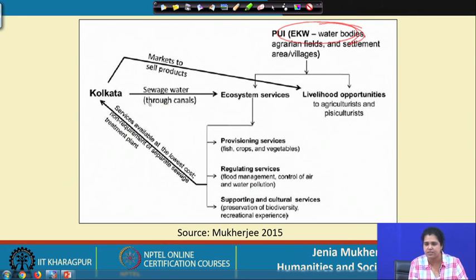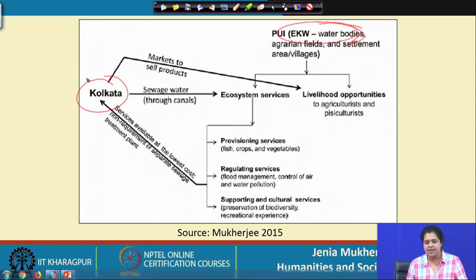The canal carries sewage water from the city to the wetlands, and on the other hand Kolkata is totally dependent on the East Kolkata wetlands — not only because they generate ecosystem services, but because Kolkata's sewage treatment totally depends on the East Kolkata wetlands in a natural way. That is why the East Kolkata wetlands are extremely significant — they are the largest natural sewage treatment facility for a city like Kolkata, not only in India but in the entire world.